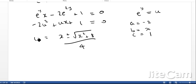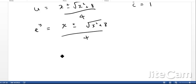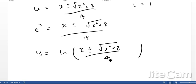And we then remember that u is equal to e to the y, so therefore e to the y is equal to x plus or minus x squared plus 8 all over 4. And then finally to find out what y is equal to, if I ln both sides, I'm going to get y is equal to ln of all of this thing here, so x plus or minus x squared plus 8 all over 4.